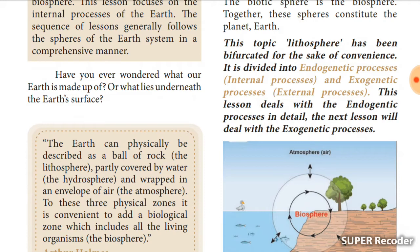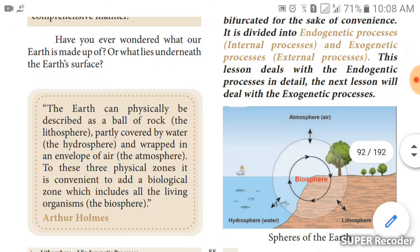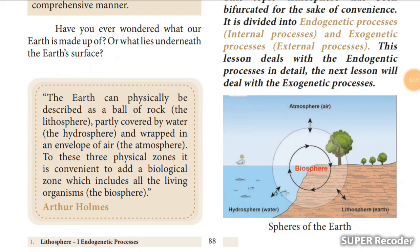Everybody will have a question about how the earth is made up of — not just the top layer but the interior layers as well. The earth can specifically be described as a ball — a round ball of rock covered by water. The rock ball is called the lithosphere and the water part is called the hydrosphere.